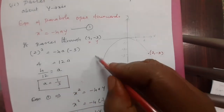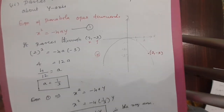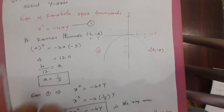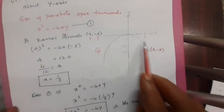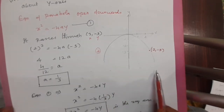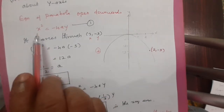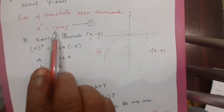So the parabola passes through 2 comma minus 3, it is symmetric about the y-axis, therefore the curve is a downward curve. The equation of the parabola open downward is x squared equals minus 4ay. We recall the four types of curve again: open rightward, leftward, downward, and upward. Open upward means x squared equals 4ay. Open downward means x squared equals minus 4ay.